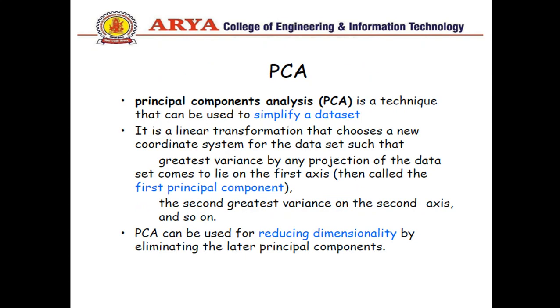Principal component analysis is a technique that is used to simplify a data set. It is an unsupervised non-parametric statistical technique primarily used for dimensionality reduction in machine learning. It is a linear transformation that chooses a new coordinate system for the data set such that greatest variance by any projection of the data set comes to lie on the first axis.